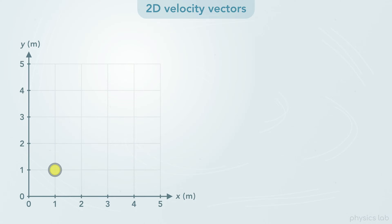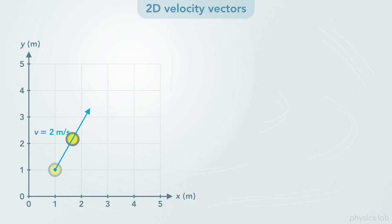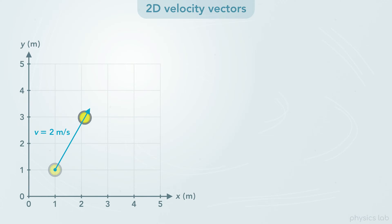What if the stone is moving 2 meters per second, but it's moving in two-dimensional motion? Then the velocity vector would look like this — it points in the direction of the velocity. But if the stone is moving at 2 meters per second in that direction, how fast is it moving in the x direction, and how fast is it moving in the y direction? To answer that, we need to find the x and y components of the velocity vector.